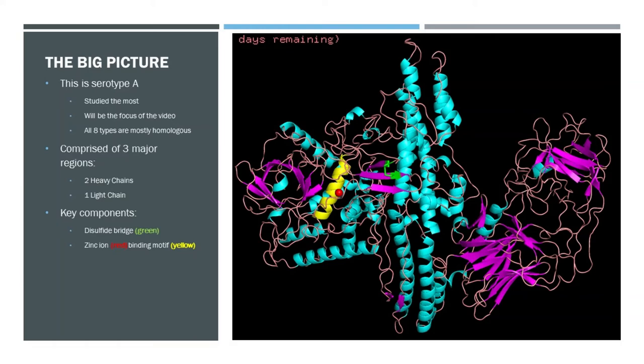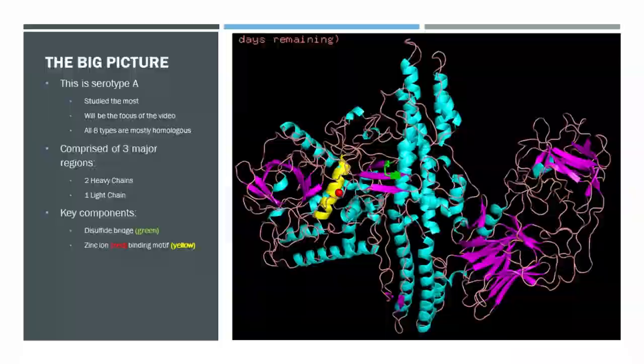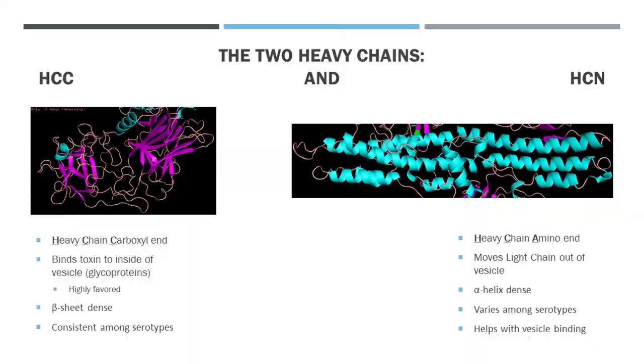Speaking of the structures, they're comprised of three major regions: two heavy chains and one light chain, which we'll get into the details of later. Key components seen in this picture are the disulfide bridge, which is in the center colored green, and the zinc ion binding motif, where the alpha helix is colored yellow and the zinc ion colored red.